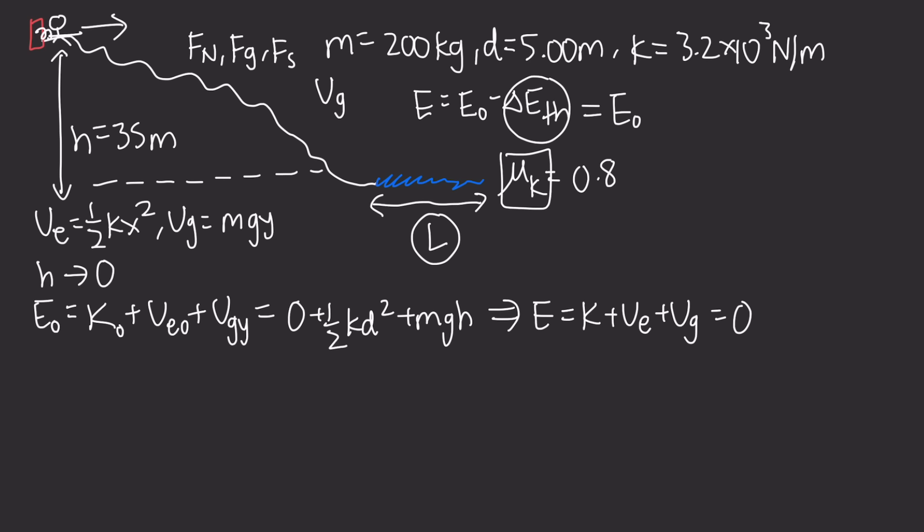Now we can move on to the change in thermal energy. We can use the equation for work to see that the change in thermal energy is equal to the work done by friction, and that is equal to the force of friction times L. We can substitute the force of friction with the coefficient of friction times the normal force, multiply that by L. We know that the normal force is equal to mg because it is not accelerating anywhere in the y direction. So we can rewrite that again as mu k mg times L.